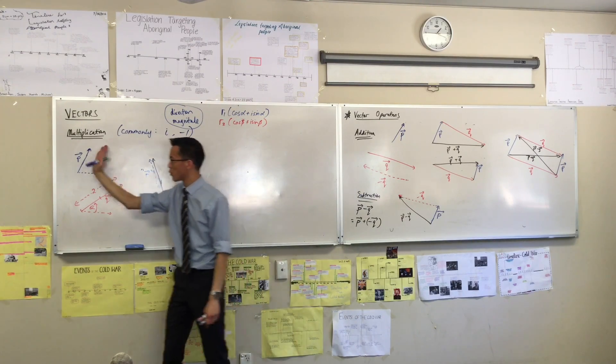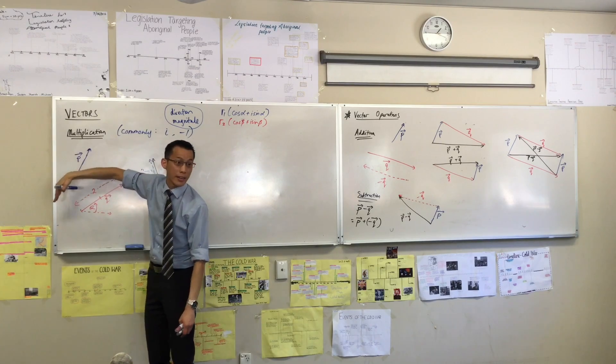Okay? So, for example, if I multiply this by negative one, it's going to rotate around pi radians. Okay? What about i?